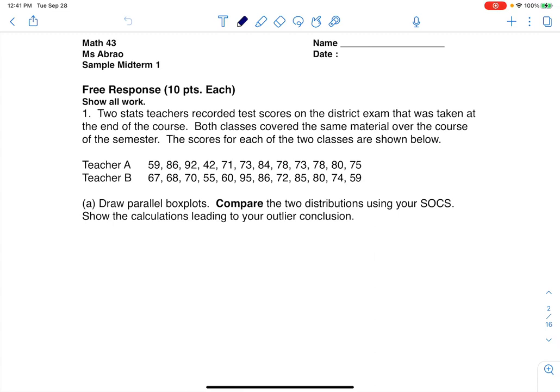When I get something like this, the first thing I want to do is put my data into my lists. Anytime I'm going to need to compare SOCs, it's a good idea to get all those stats from one-var stats. I'll start writing out some stats here - teacher A's stats over here and teacher B's over here. Especially if we're getting outliers, I'm definitely going to want the min, Q1, median, Q3, and the max. I'll write out the five-number summary.